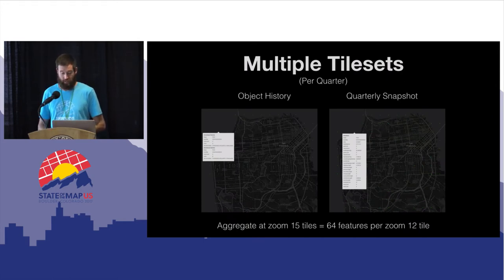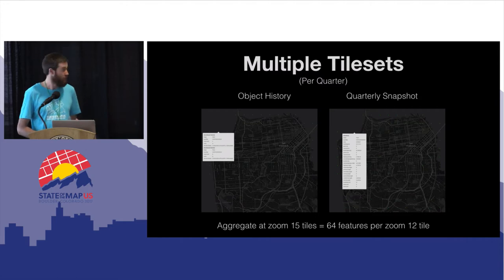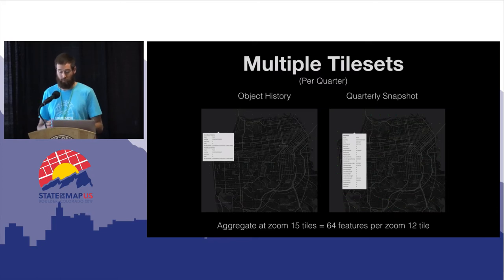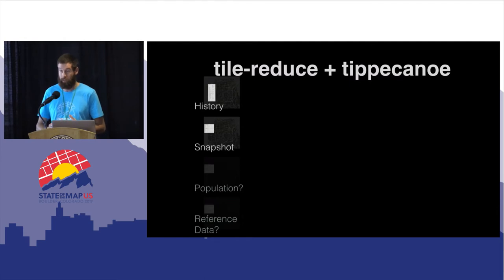Now we have multiple tile sets to feed our analysis: object histories and quarterly snapshots. First we aggregate these data at zoom 15, which means roughly one square kilometer resolution. Results are represented by point geometries and then rendered to zoom level 12 tiles with 64 individual features per tile. Using Tile Reduce, we specify multiple tile sets as input. This approach could easily scale to incorporate more sources such as population data for normalization or reference data sets for a more traditional extrinsic quality assessment.